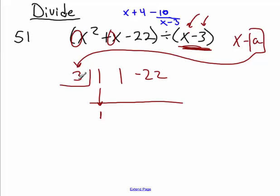Number one. Then you take this three and multiply it by this coefficient. Three times one is three, and you put it right here. You don't subtract, but you add these. One plus three is four. Three times four, multiply three times four is twelve. You put it right here, and then you add these. Minus twenty-two plus twelve is a minus ten.